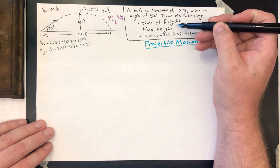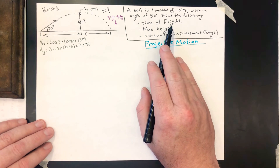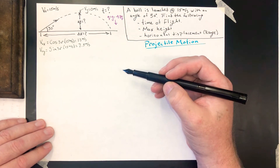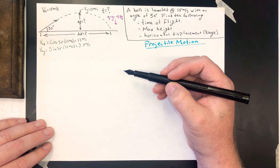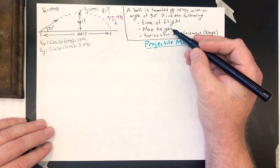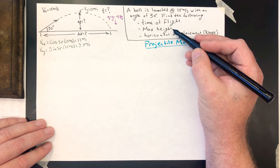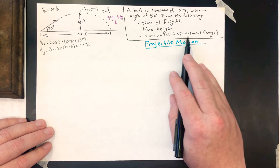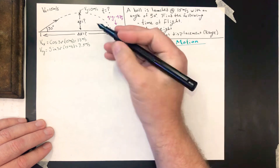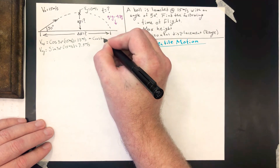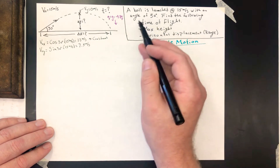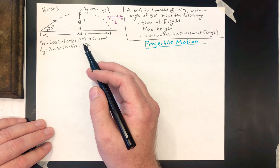We're trying to find a few things: time of flight, max height, and horizontal displacement. How long a projectile is in the air is always determined by what's happening in the vertical direction — this thing is in the air until it hits the ground, and what makes it hit the ground is gravity. Maximum height is similarly dictated by the vertical component of velocity. Horizontal displacement is controlled entirely by our x velocity, which is constant at 13 m/s. Once I know how long it's in the air, I just take speed times time.